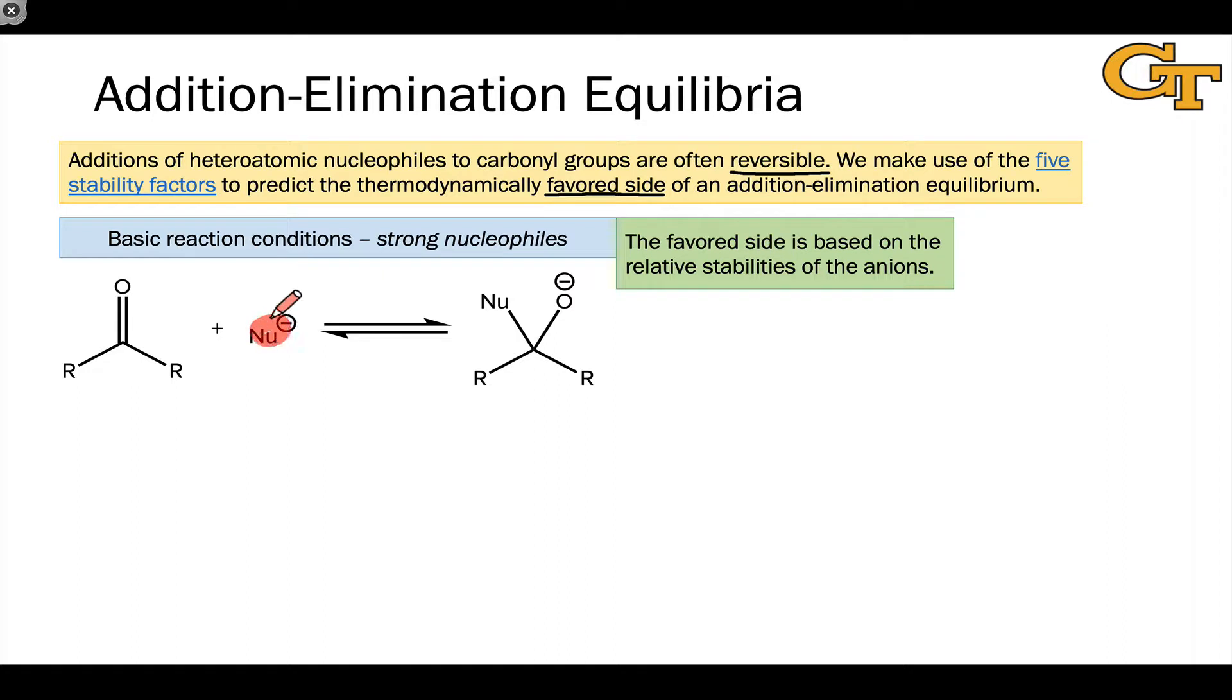On the left side, we have the nucleophile anion, nu minus, and we're thinking about the stability of that in relation to O minus. Things like resonance stabilization of the nucleophile, the electronegativity of the anionic atom in the nucleophile relative to oxygen, and other factors like inductive effects will come into play. All of these five stability factors can play a role in the favored side of this addition equilibrium.